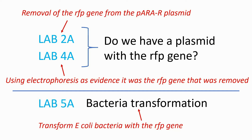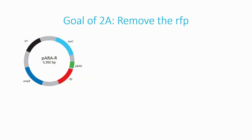What makes bacteria interesting to us in this lab is that genetic information can be exchanged through plasmids — rings of DNA that can pass from one bacterium to another.